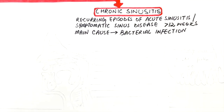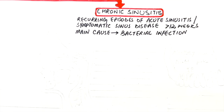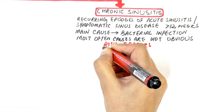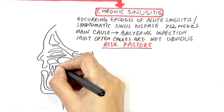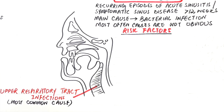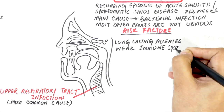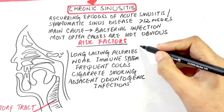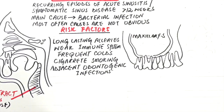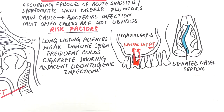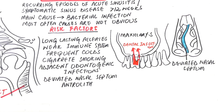The causes of chronic sinusitis are most often not obvious and can be hard to pin down and treat. Risk factors include a recent upper respiratory viral infection, long-lasting allergies, a weak immune system, frequent colds, and cigarette smoking. Adjacent and odontogenic infections are also listed risk factors. Structural deformities such as a deviated nasal septum could also be a cause, as can tumors or nasal polyps that block drainage from the sinuses.